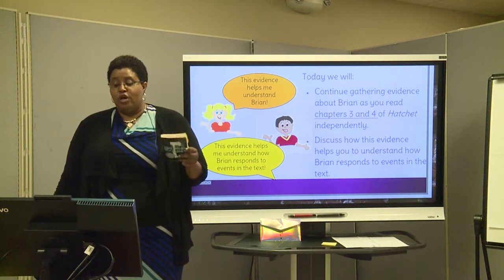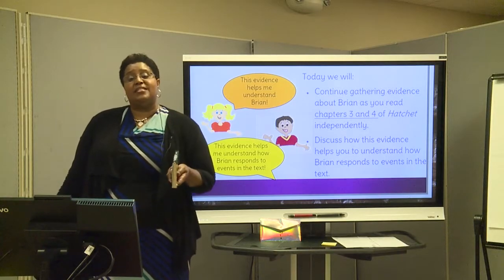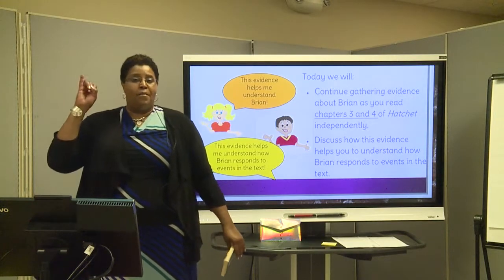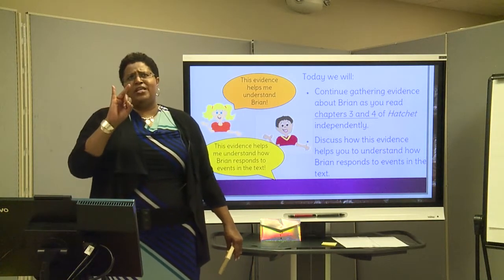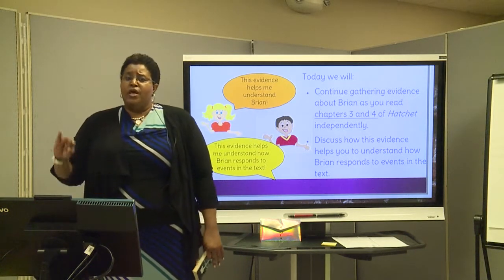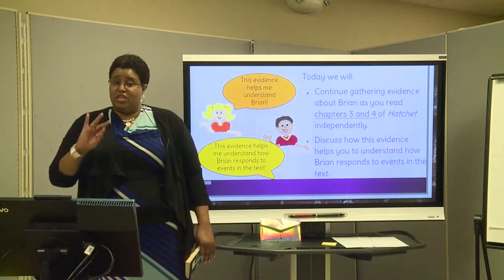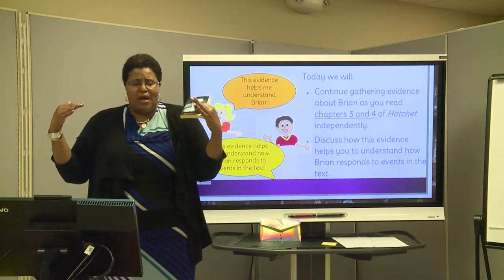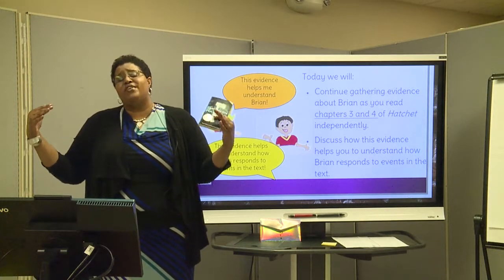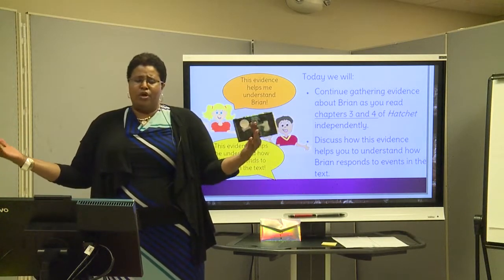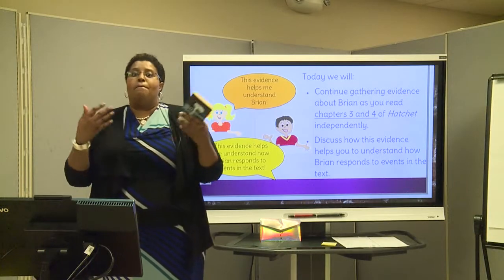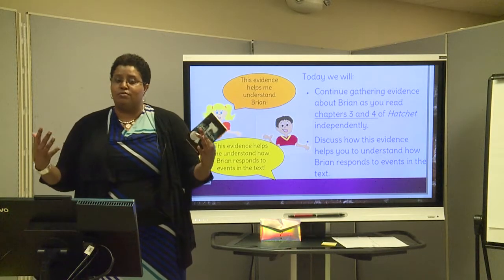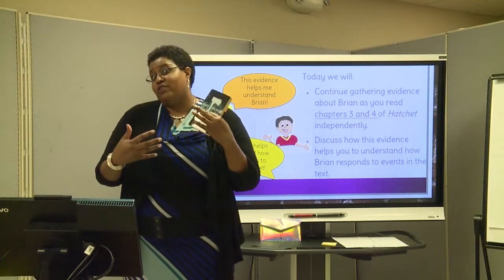Discuss how this evidence helps you to understand how Brian responds to the events in the text. We came up with five major events a couple of lessons back: the pilot having a heart attack; Brian being on the plane going to see his father; his mother giving him that hatchet; the thoughts about the divorce and the secret he keeps thinking about; and him trying to fly the plane on his own. And then the plane crash and his survival — he survives the plane crash! But he survives to do what? I have to keep reading to figure that out.